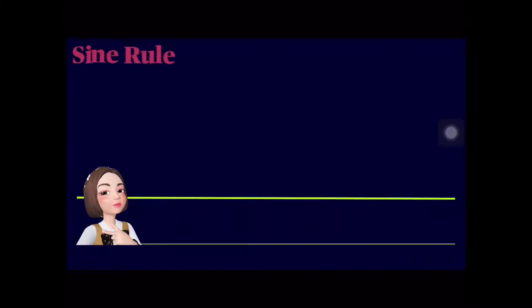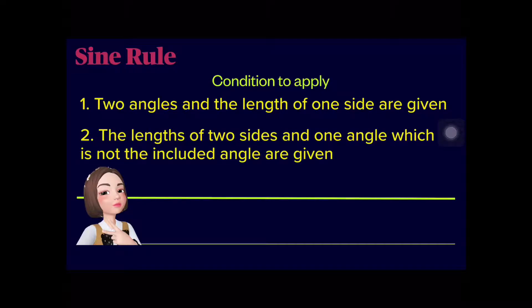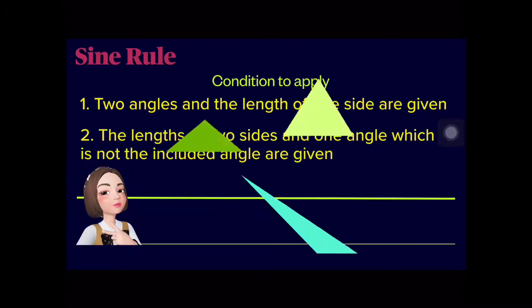When can we use or apply the sine rule? The sine rule is used to solve a triangle when two angles and the length of one side are given, or when the lengths of two sides and one of the angles which is not the included angle are given.